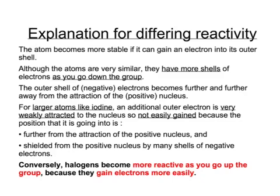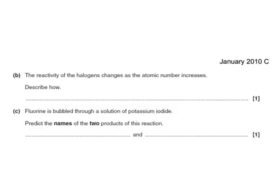The reactivity of the halogens changes as the atomic number increases. As the atomic number increases — going down the group — the reactivity decreases.